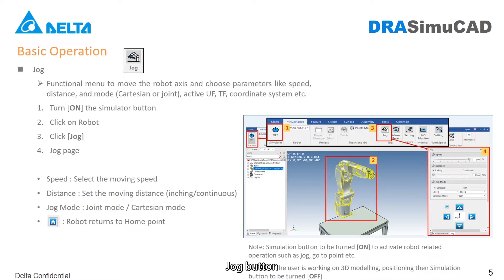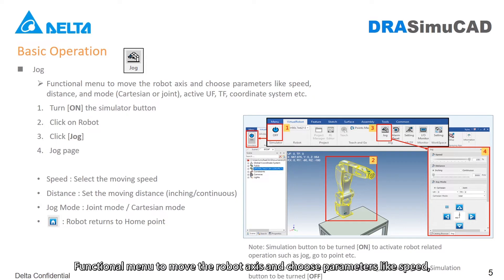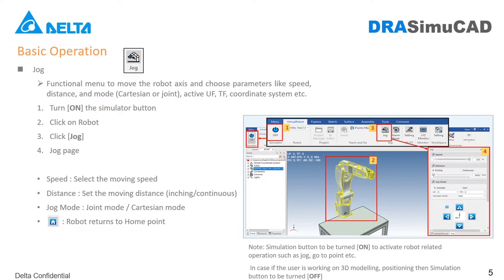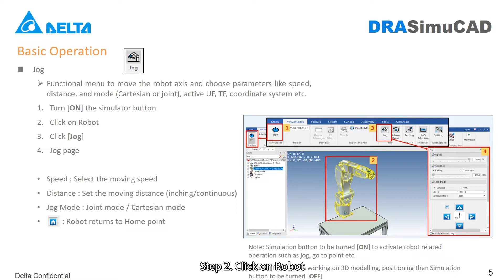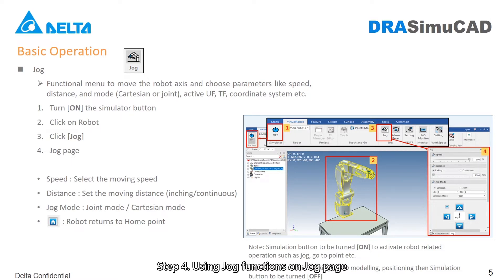Jog Button: A functional menu to move the robot axis and choose parameters like speed, distance and mode (Cartesian or joint), active UF, TF, and coordinate system. Operation steps: Step 1, turn on the simulator button. Step 2, click on robot. Step 3, click Jog. Step 4, use jog functions on the jog page.